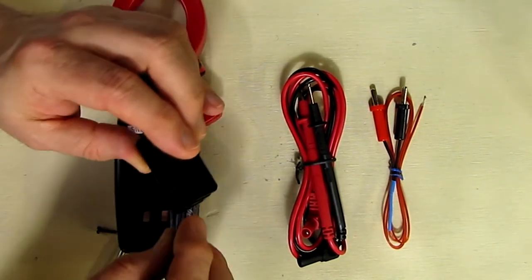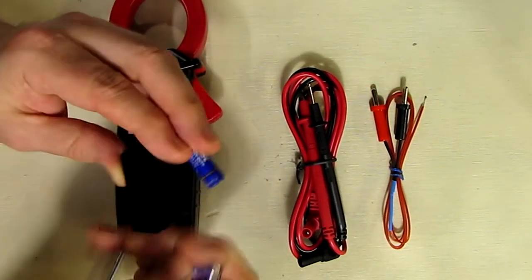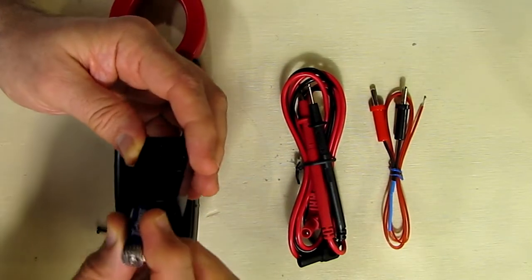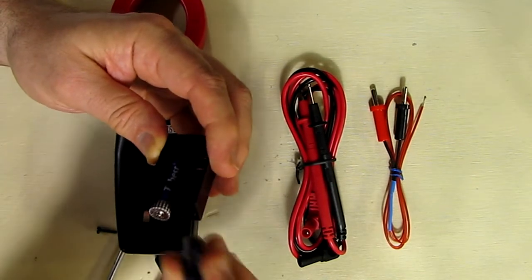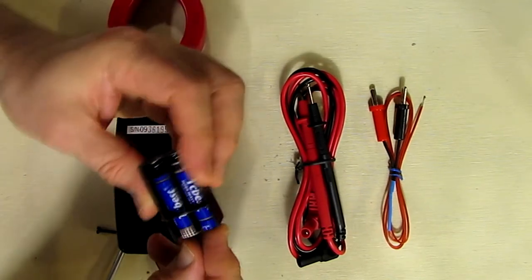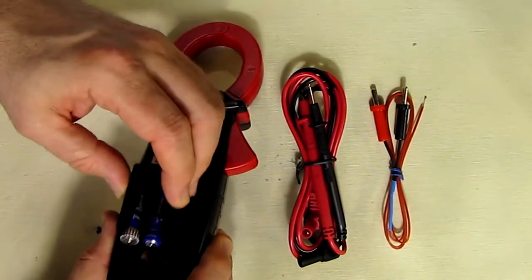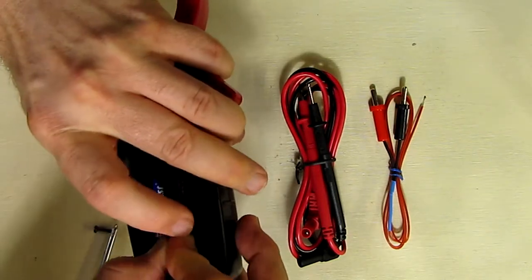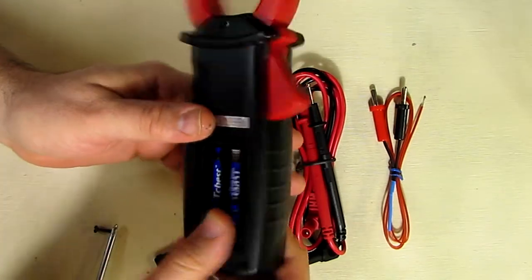The way the batteries go in, there is a plus sign on this tab right here. It's hard to see if the camera is not picking it up, but on that tab there's a plus sign. So I'm going to put this in that way with the positive of the battery going that way, and then this in the other direction so the negative is there. Then this right here is connected so you have three volts and you place it back into the meter.